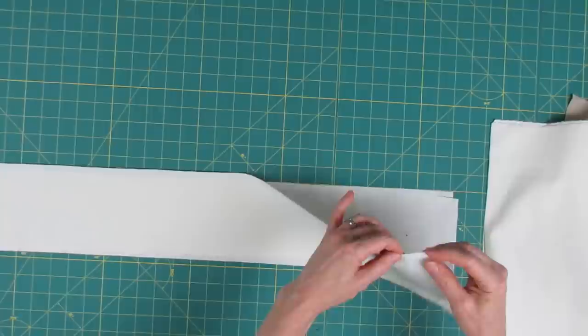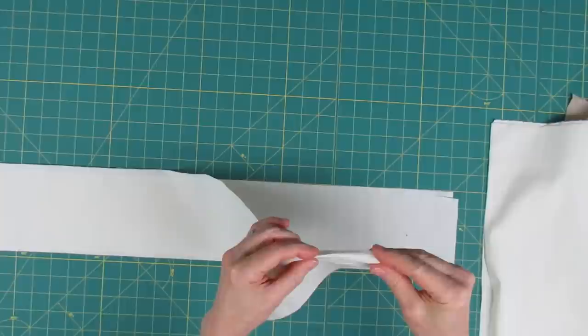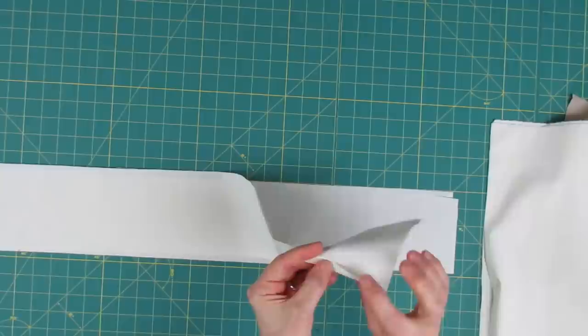For right now I'm going to set aside the body and the tie, and we're just going to get started here on the pockets. The first thing that we want to do is this hem across the very top of the pocket. So go ahead and take it over to the ironing board, press under 1 cm on the top, and then take it over to the sewing machine and just sew that down.